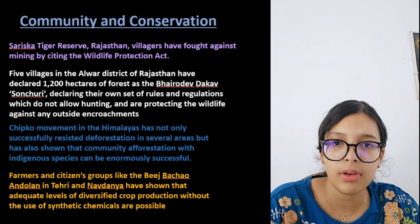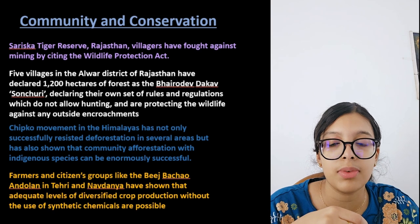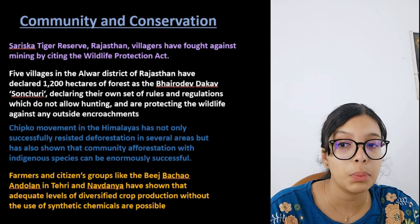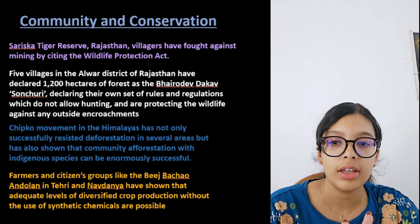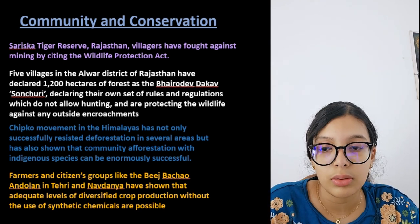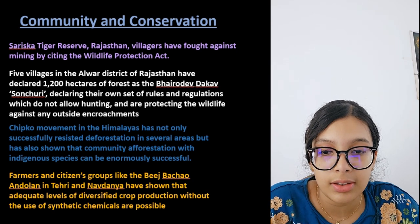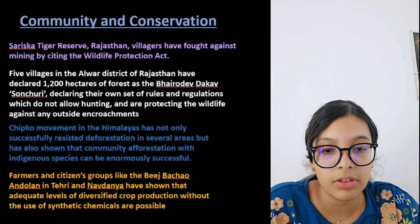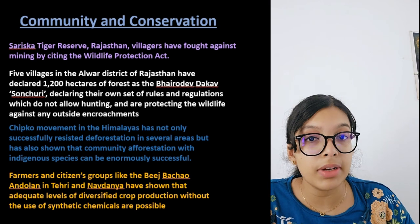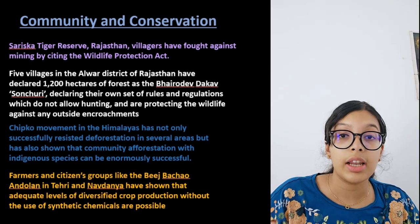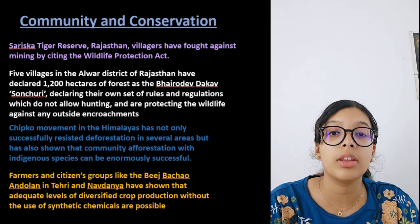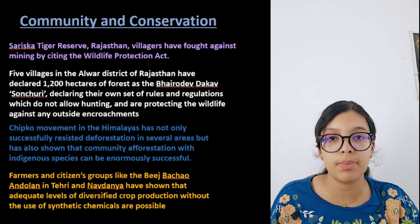Community and conservation is the next topic — this is a small chapter, scoreable, with two to three mark questions. At Sariska Wildlife Reserve in Rajasthan, villages have fought against mining by citing the Wildlife Protection Act. These are occasions like the Chipko movement — a movement where people hugged trees so that those who came to cut them couldn't do it.